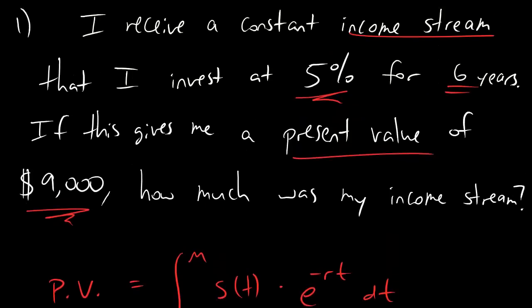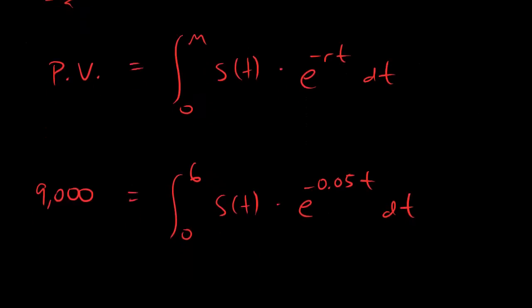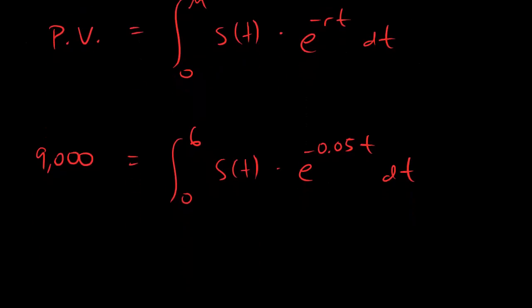And dudes, here's the thing. They also say that this income stream is constant. And what constant means is that it's just a number - there are no t's or anything like that in there. So instead of S(t), which might be some crazy random function, we can replace that with just a single number. And this we'll just call it S, but we're going to remember that S is a constant.